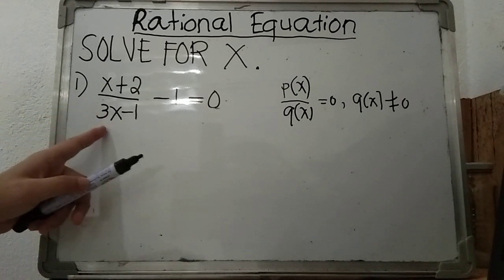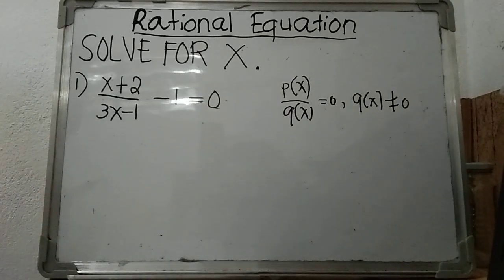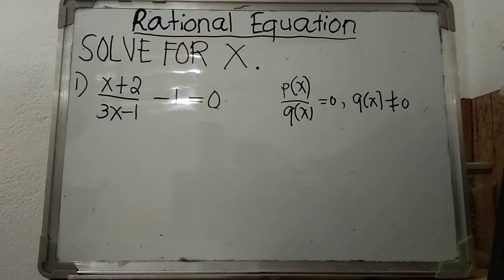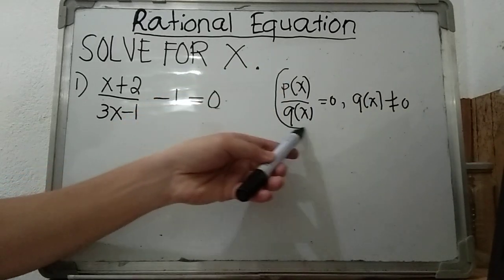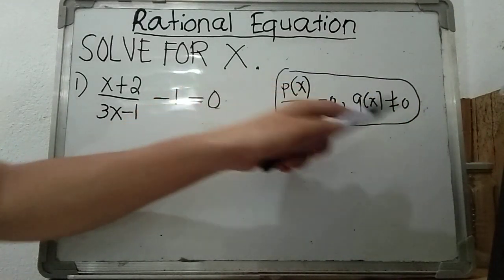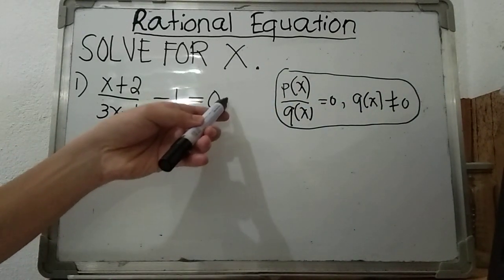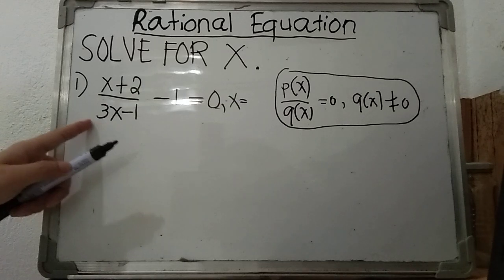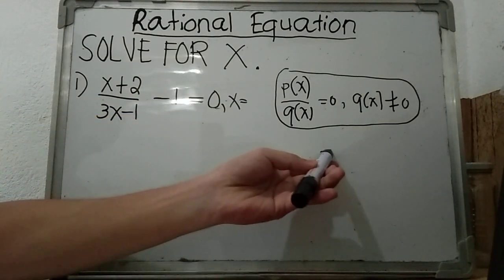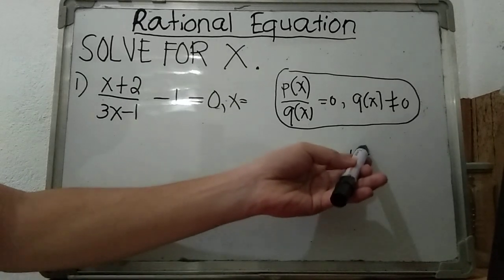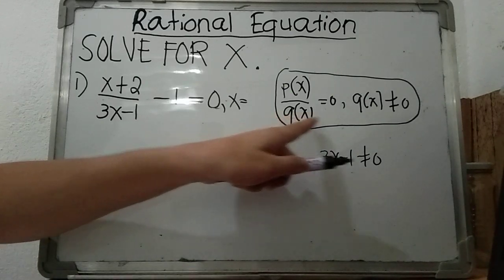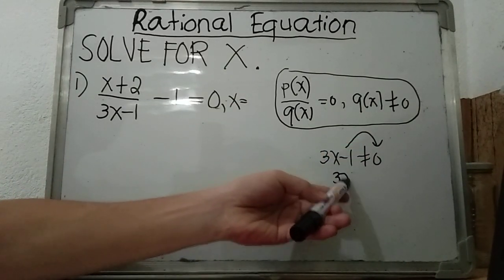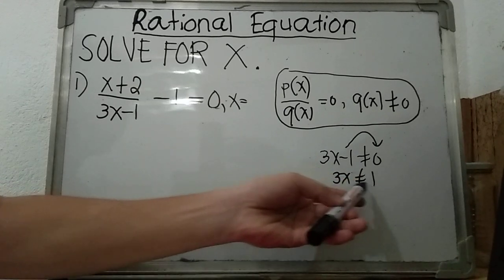Now for rational equations, we have here an example: x plus 2 over 3x minus 1, minus 1, equals 0. Based on our rational expression definition, our denominator should not be equal to zero, so we are going to create a restriction. The restriction is taken from the denominator 3x minus 1. That denominator should not be equal to zero, so transposing gives us 3x not equal to 1 over 3.